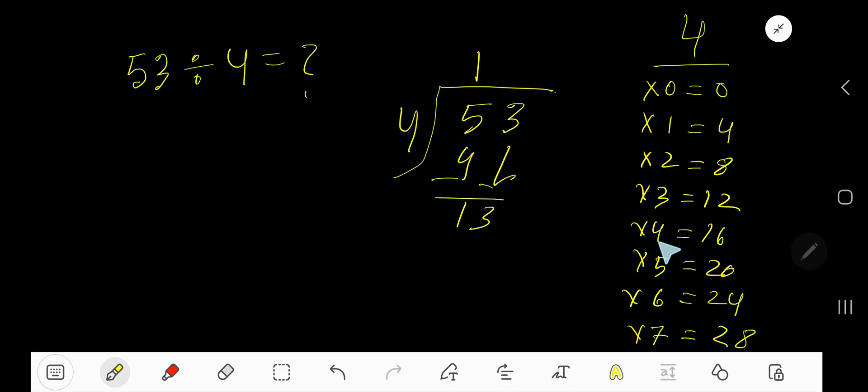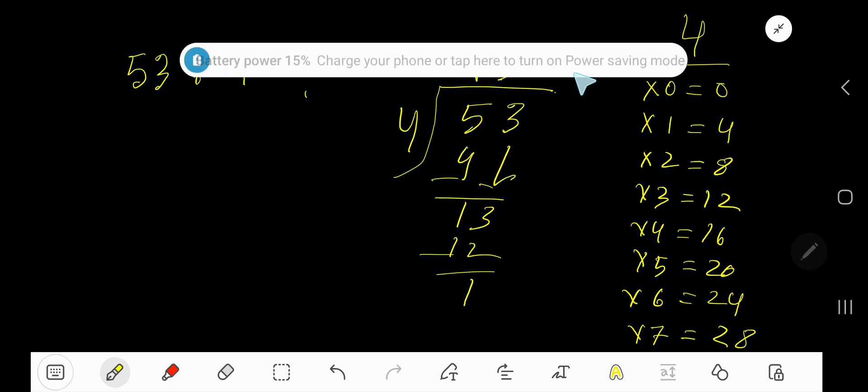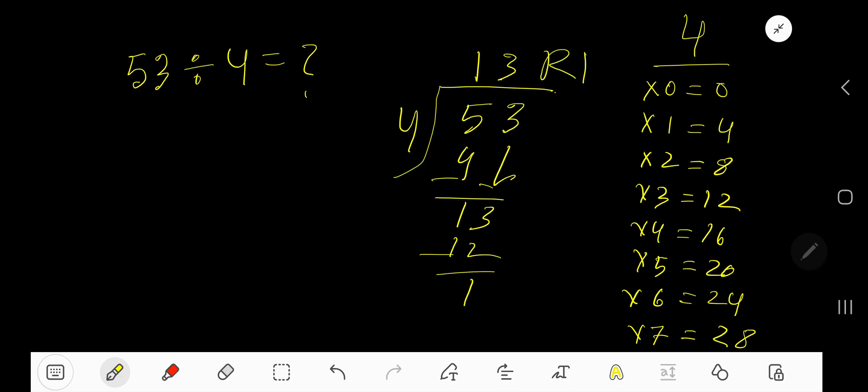4 goes into 13 how many times? 4 times 4 is 16, which is greater, so 3 times. Write 3. 3 times 4 is 12. Subtract 1. So our answer is 13 remainder 1.